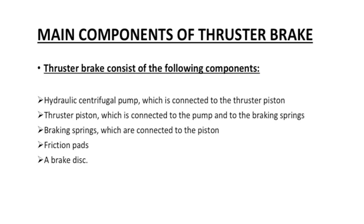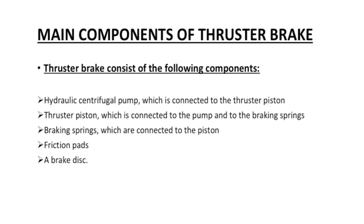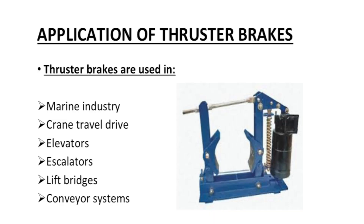Main components of the thruster brake: the hydraulic centrifugal pump, which is connected to the thruster piston. The thruster piston, which is connected to the pump — they are connected to each other. A braking spring, which is connected to the piston. Friction pads and a brake disc. Applications: thruster brakes are used in marine industries, crane travel drives, elevators with escalators, and lifting bridges.